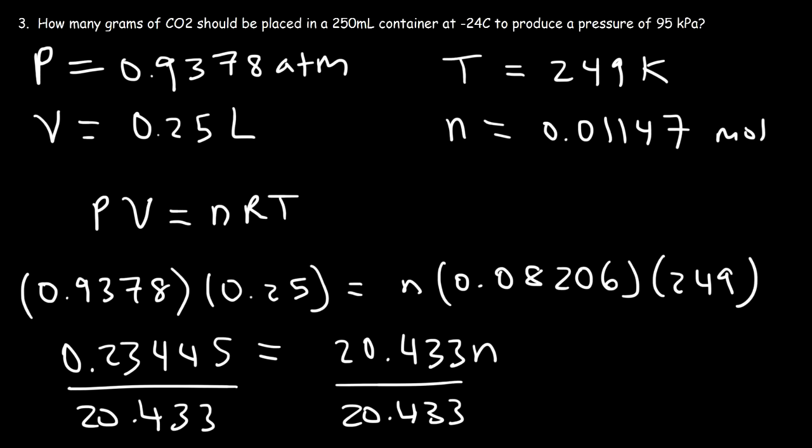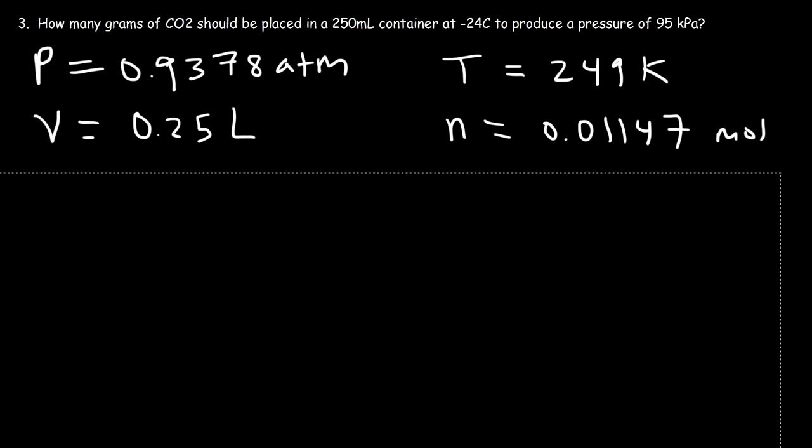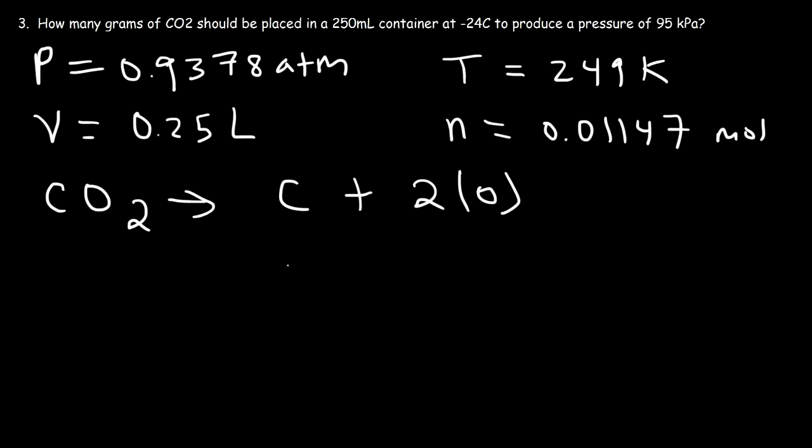All right, so now all we need to do is convert the moles into grams. In order to do that we need to get the molar mass of CO2, which is composed of one carbon atom and two oxygen atoms. The atomic mass of carbon is 12.01 and the atomic mass of oxygen is 16, so 2 times 16, that's 32, plus 12.01, that's 44.01 grams per mole.